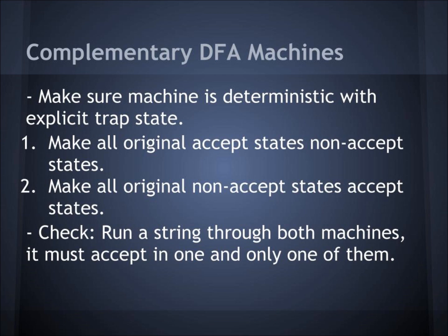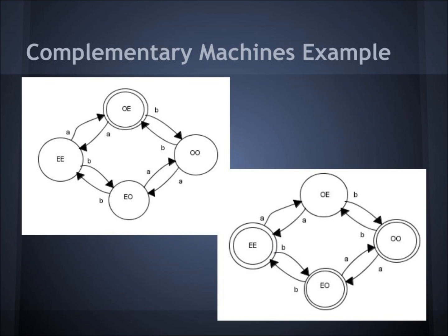Next, we have complementary DFA machines. First, you make sure the machine is deterministic with an explicit trap state. You make all original accept states non-accept states, and make all original non-accept states accept states. To check, you run a string through both machines — it must accept in one and only one of them. This is the complementary machine of the odd-even machine.